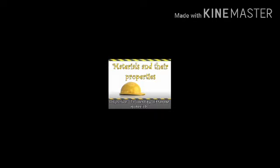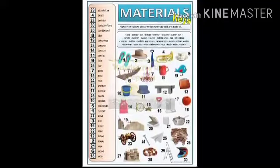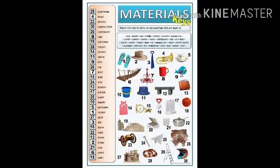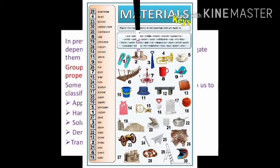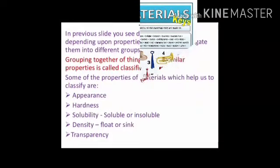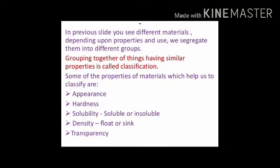सभी materials एक दूसरे से अलग होते हैं अपने size, shape, color, texture और smell में। For example, wood से chair भी बना सकते हैं और bed भी, लेकिन दोनों shape और size में बिल्कुल different होते हैं। ये सभी man-made materials हैं जो हम daily life में use करते हैं। सभी substances को उनकी properties और use के basis पे अलग-अलग classify किया जाता है।